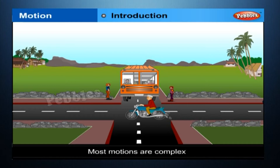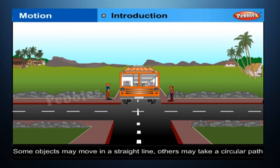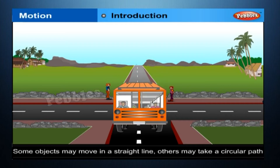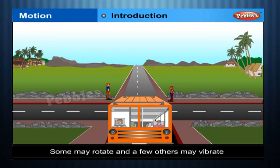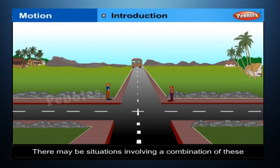Most motions are complex. Some objects may move in a straight line, others may take a circular path. Some may rotate and a few others may vibrate. There may be situations involving a combination of these.